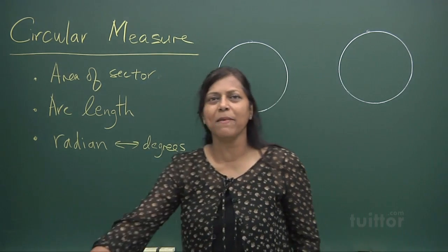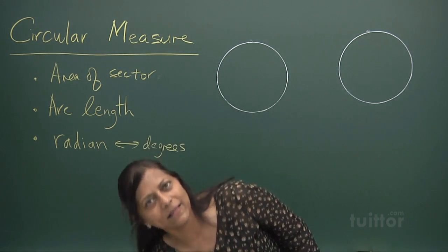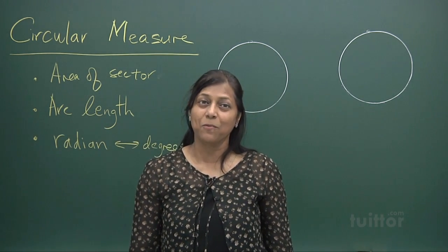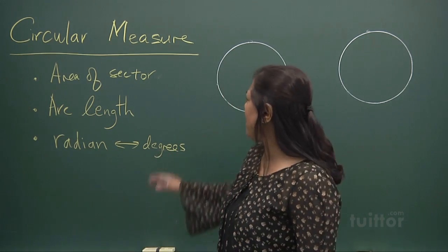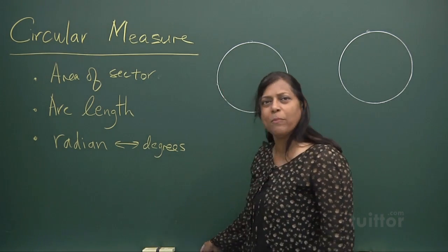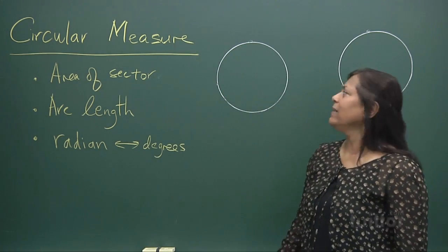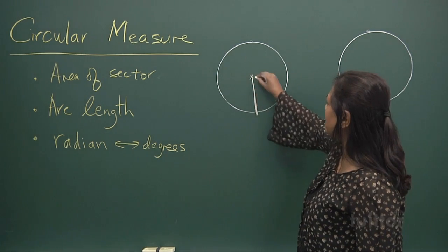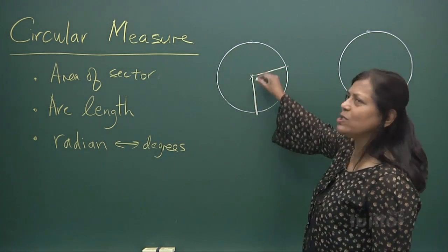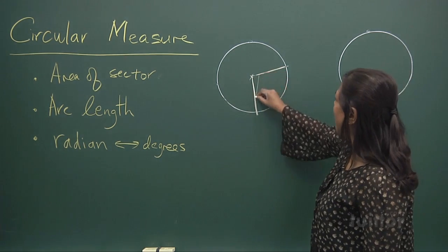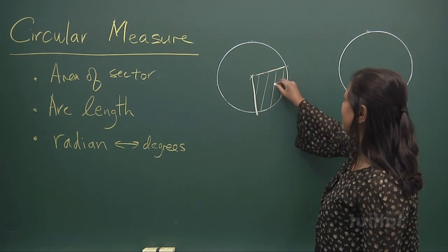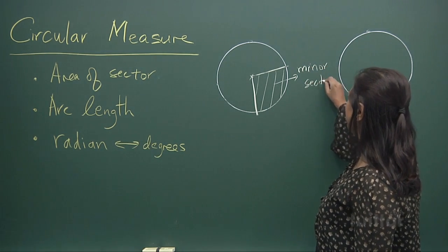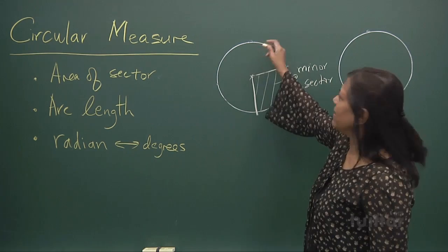Now, what about circular measure? It plays a vital role in learning about circles and their properties. Now, in a circle I told you about a chord — a chord divides a circle into segments. But if we have a radius, this would divide the circle into a sector. And this is called a minor sector, and that's called a major sector.